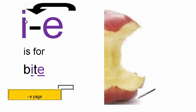When the jumping E acts on I, it makes the short IH into a long I. So this word is BITE — without the E it would be BIT. So BITE.